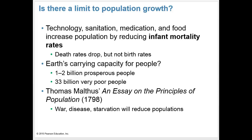Environmental scientists have tried to pin a number on what the actual carrying capacity for people is on Earth. Carrying capacity is the total number of a population that the Earth can actually support. These numbers vary depending on whether you want the people to be prosperous and wealthy — about 1 to 2 billion if everybody is prosperous — but could go as high as 33 billion, though those people would not have much wealth or food. Possibly somewhere in between would be the actual carrying capacity.